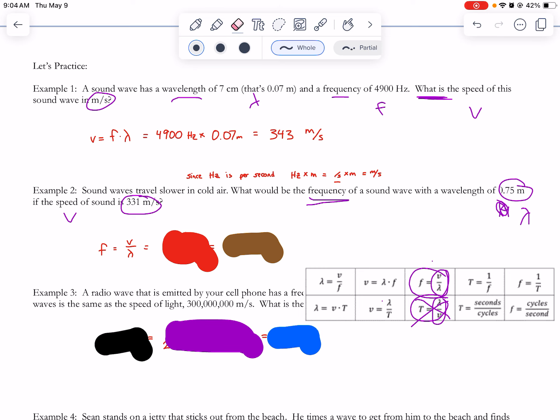I have to divide in the right order, so I put the speed on top because that's what the formula tells me to do. So when I plug that into my calculator, I did 331 divided by 0.75.